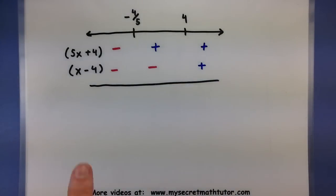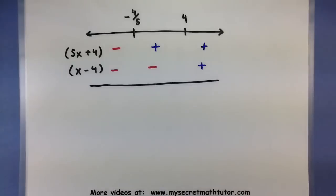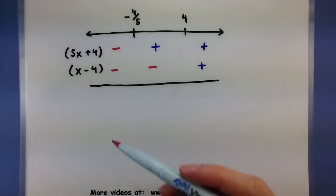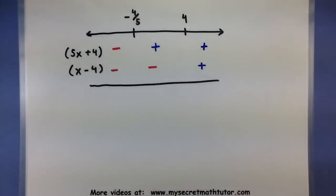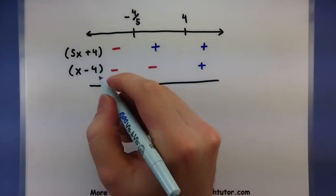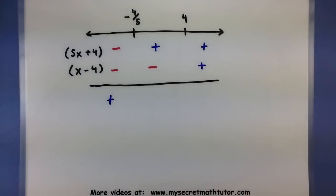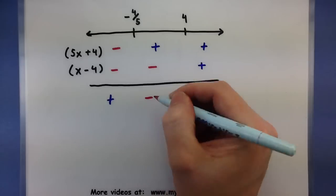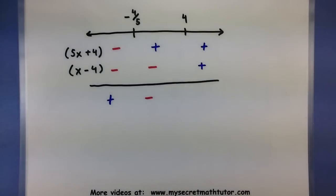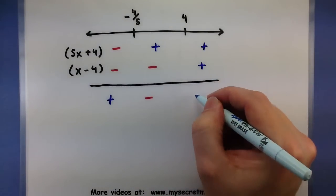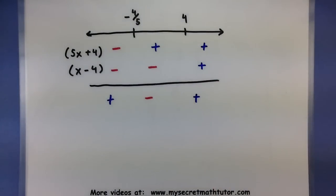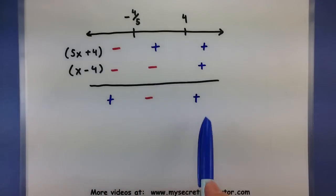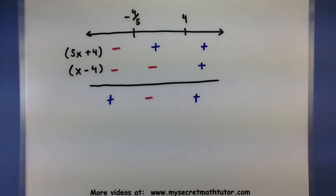In our overall quadratic, both of these factors are being multiplied together. So I'm going to take these signs and multiply them to see what the overall result will be. Negative times negative gives a positive value. Positive times negative gives negative. And positive times positive gives another positive value. This last row represents what the overall polynomial is going to be.